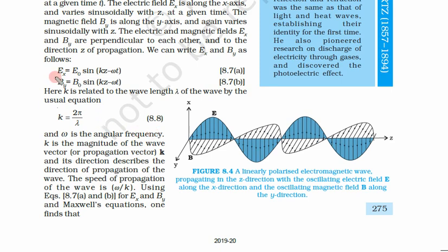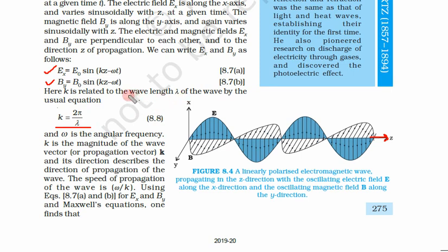We have seen the equations of an electromagnetic wave moving in the positive z direction. The equations were: Ex is equal to E₀ sin(kz − ωt), and By is equal to B₀ sin(kz − ωt), where k is 2π/λ and λ is the wavelength of this wave.